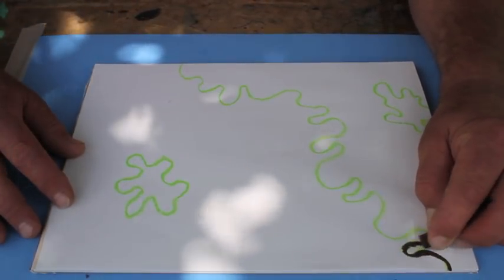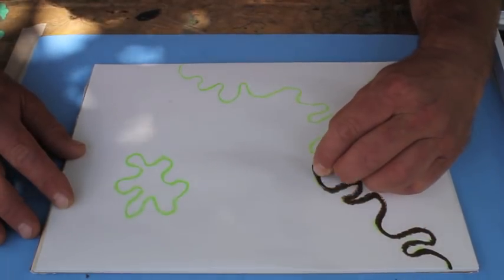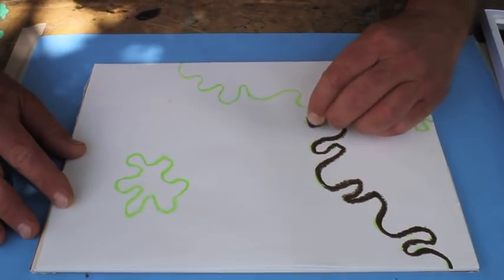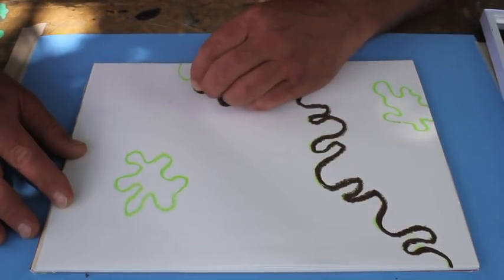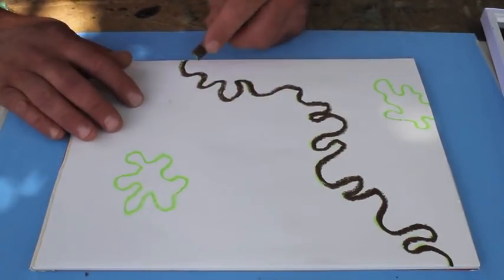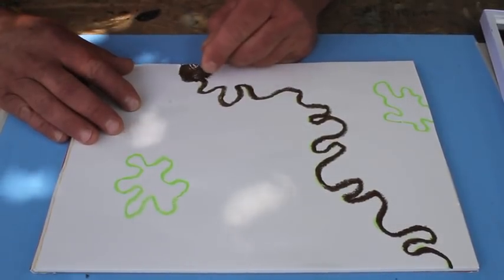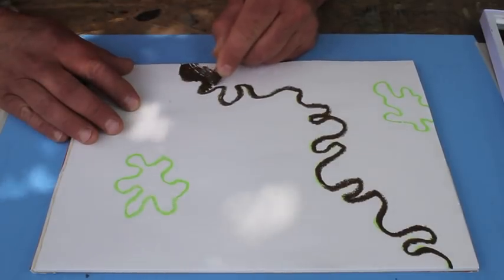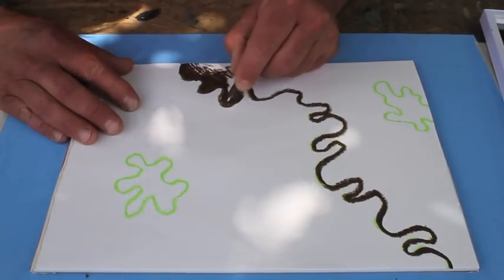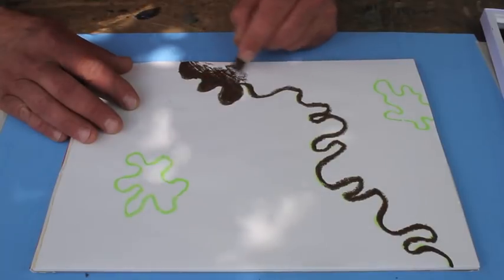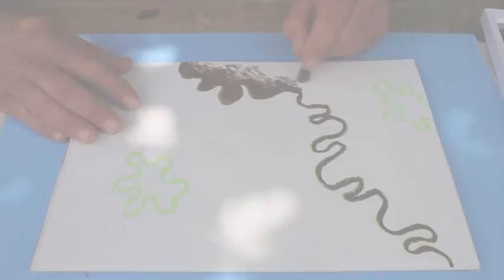I'm going to start on this side with a dark brown and retrace the line. Now I'm going to go back and blend that line out into this side and move away from the edge. Press hard close to the edge and ease up as you move away, so there's not as much pigment being put on the page as you move away from the edge.